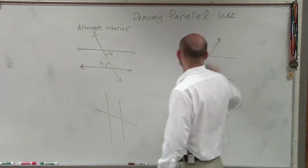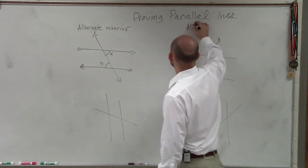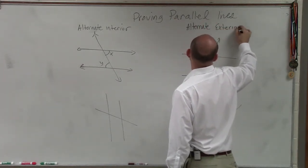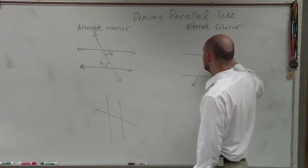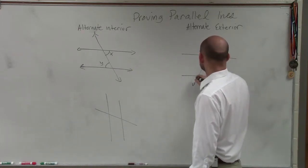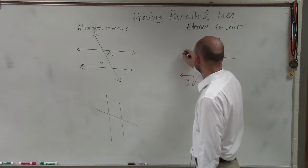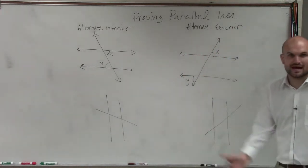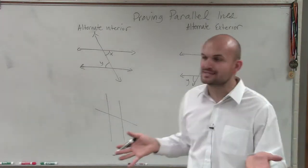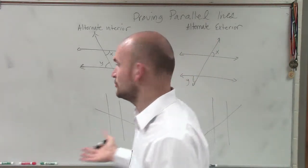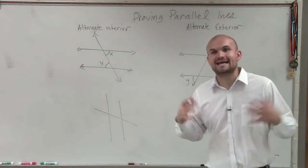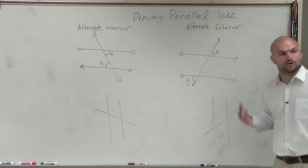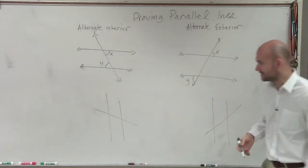Then let's do alternate exterior. Alternate exterior is the exact same representation. You have lines that are on opposite sides of the transversal, the line that's intersecting your two lines. But now these two angles are on the exterior, outside your two lines. And obviously we've talked more about parallel lines, and we're going to get more into parallel lines today.